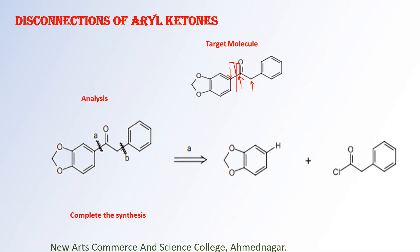Why is the other bond disconnection the bad one? Because the carbonyl group is away from this phenyl ring. Therefore, that disconnection is the bad one. In the same fashion, once you finalize that the first disconnection is the best one, disconnect in the direction of aromatic carbon. Once you disconnect in the direction of aromatic carbon, again it is retro-FC acylation reaction, which gives your aromatic compound.